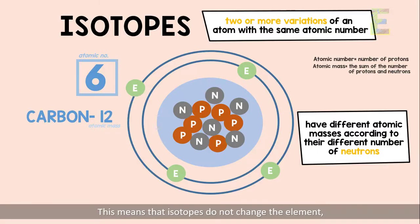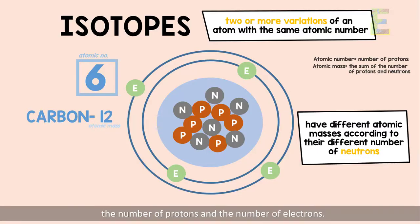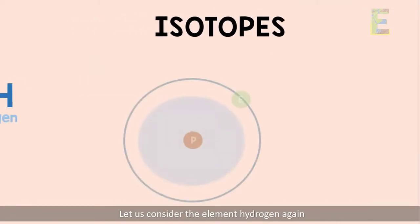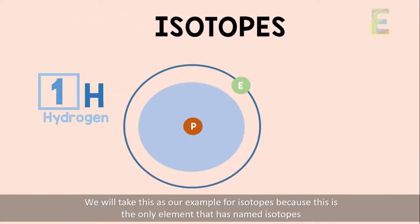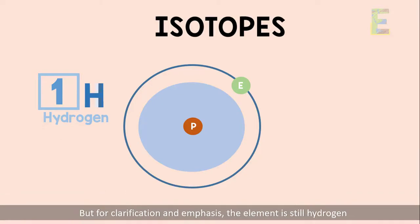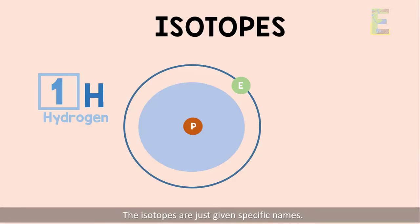This means that isotopes do not change the element, the number of protons and the number of electrons. Let us consider the element hydrogen again. We will take this as our example for isotopes because this is the only element that has named isotopes. But for clarification and emphasis, the element is still hydrogen. The isotopes are just given specific names.